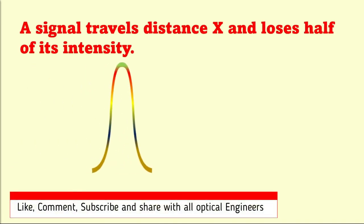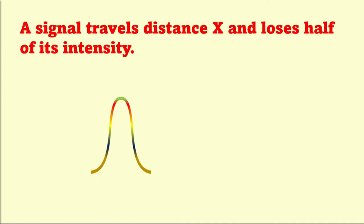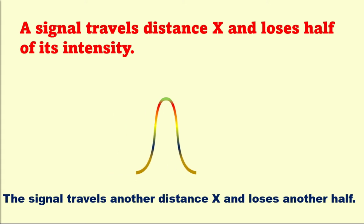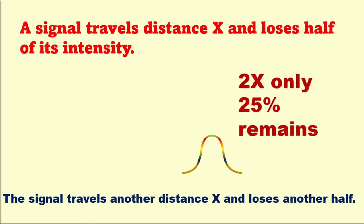The signal is inversely proportional to the distance squared. A signal travels distance X and loses half of its intensity. The signal travels another distance X and loses another half. After 2X only 25% remains, after 3X only 12.5% remains.